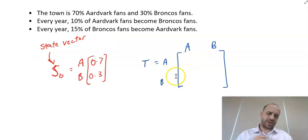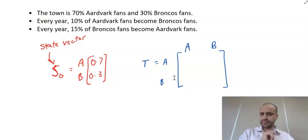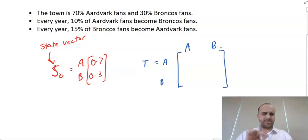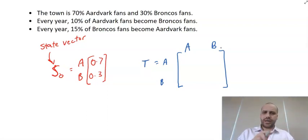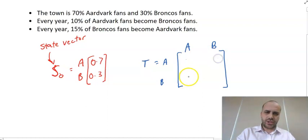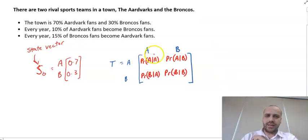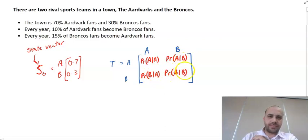Now we're going to determine something called the transition matrix. We have A and B along the left and A and B along the top. What we're putting in each position is: the probability of A given A, the probability of A given B, the probability of B given A, and the probability of B given B.